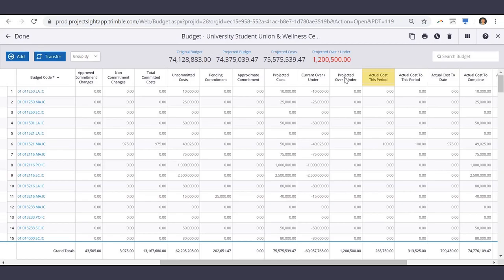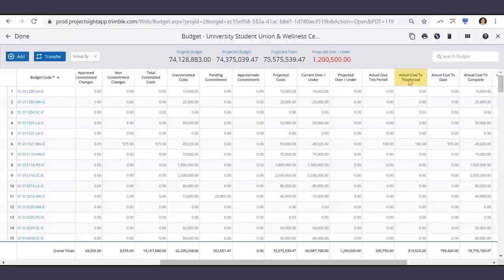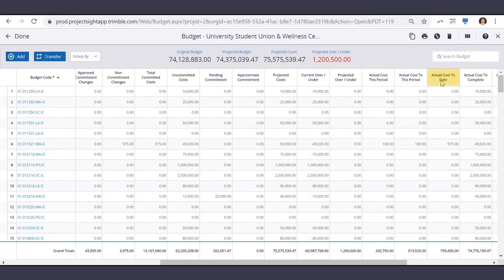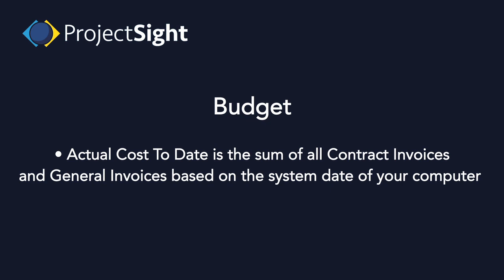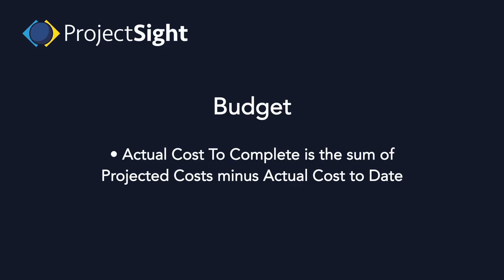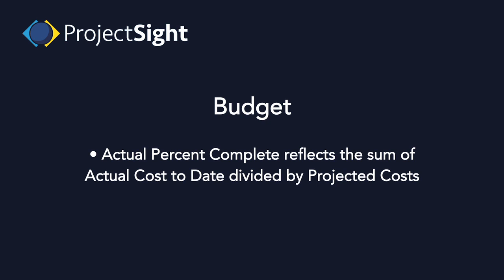Actual cost this period reflects the sum of all contract invoices and general invoices for the current cost period. Actual cost to date reflects the sum of all contract invoices and general invoices from all previous cost periods, including the current cost period. Actual cost to complete is the sum of all contract invoices and general invoices based on the system date of your computer. Actual cost to complete is also the sum of projected costs minus actual cost to date. Actual percent complete reflects actual cost to date divided by projected costs.